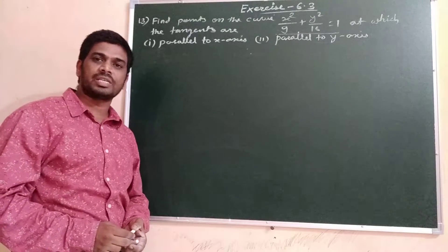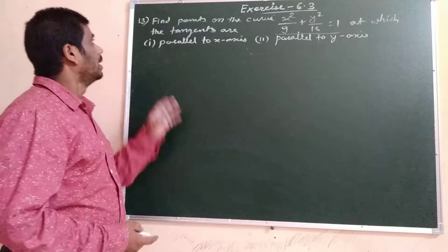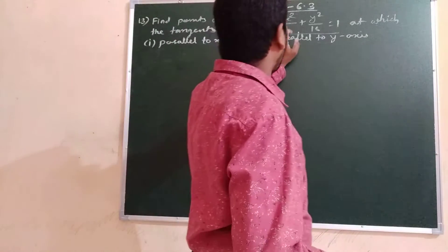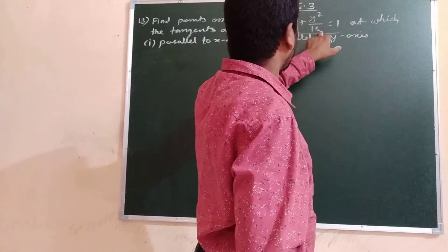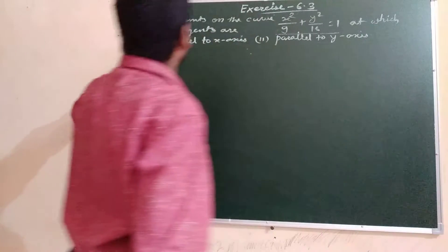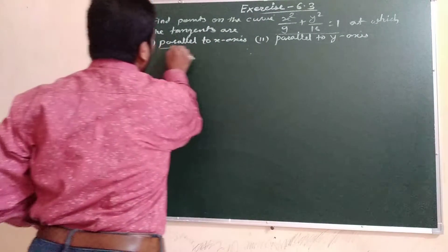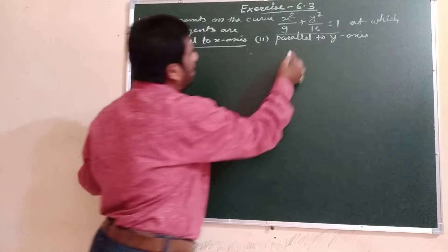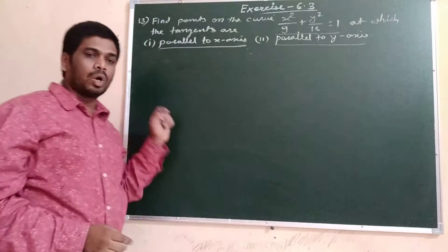Thirteenth question of exercise 6.3: find the points on the curve x²/9 + y²/16 = 1 at which the tangents are parallel to the x-axis and the tangents are parallel to the y-axis.